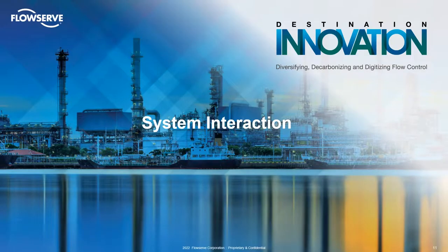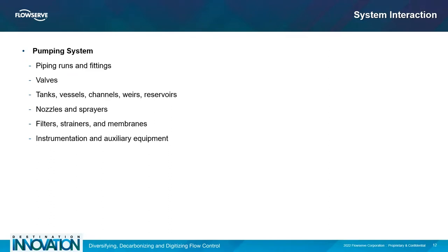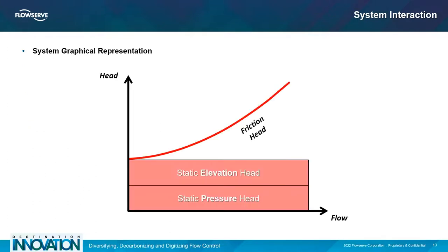A deeper dive into the system will help to understand how excessive throttling restricts pump system longevity. The pump system is anything that ties the suction source being drawn from to the delivery source being discharged into. This includes piping runs of specific hydraulic diameter, valves, strainers, and fittings. Each component within the pump system will carry a certain amount of differential pressure, elevation, and friction to be overcome in order to induce flow.